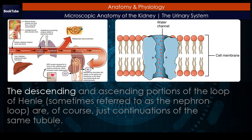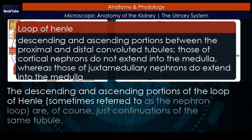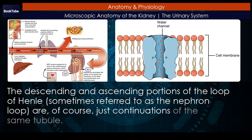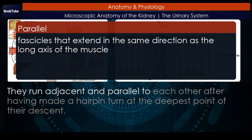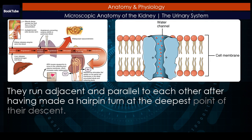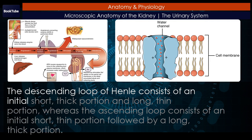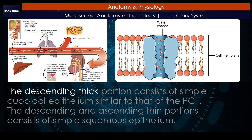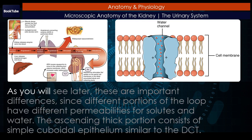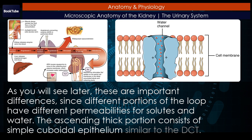Loop of Henle. The descending and ascending portions of the loop of Henle, sometimes referred to as the nephron loop, are continuations of the same tubule. They run adjacent and parallel to each other after having made a hairpin turn at the deepest point of their descent. The descending loop consists of an initial short thick portion and a long thin portion, whereas the ascending loop consists of an initial short thin portion followed by a long thick portion. The descending thick portion consists of simple cuboidal epithelium similar to that of the PCT. The descending and ascending thin portions consist of simple squamous epithelium. These are important differences, since different portions of the loop have different permeabilities for solutes and water. The ascending thick portion consists of simple cuboidal epithelium similar to the DCT.